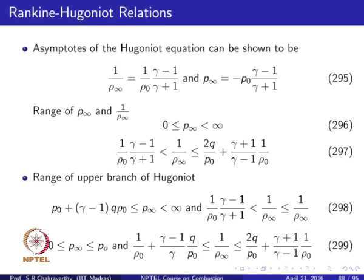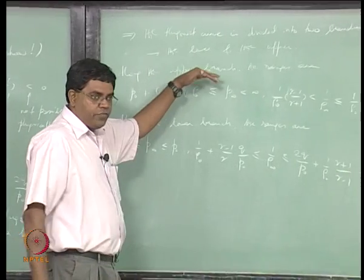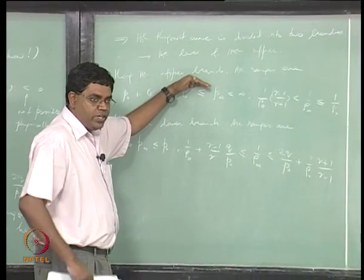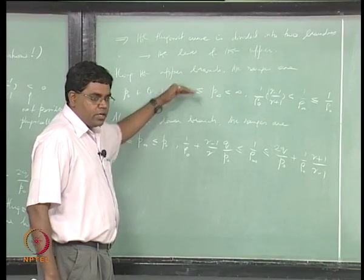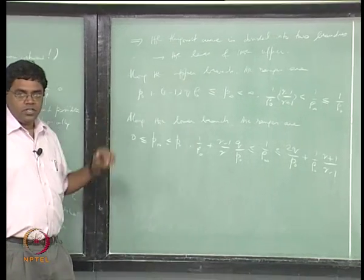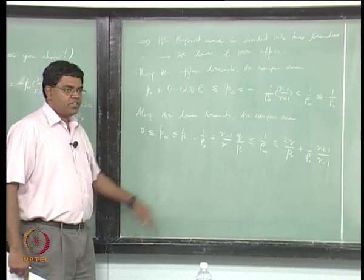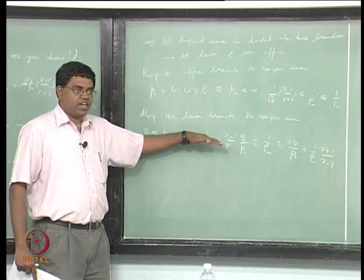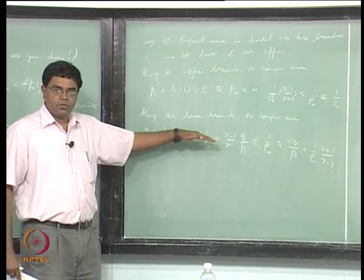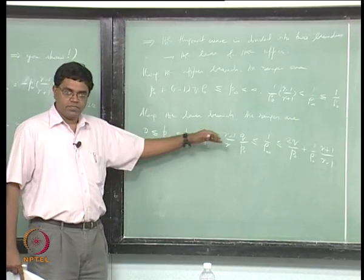The upper branch corresponds to a compression wave that decelerates the flow — we call it a detonation wave. The lower branch is an expansion wave that accelerates the flow — we call it a deflagration wave.